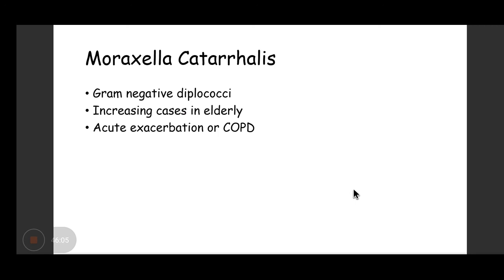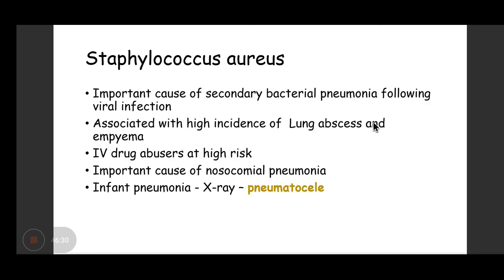Moraxella catarrhalis is a gram-negative diplococcus. Cases are increasing particularly in developed countries where immunization against pneumococcus and H. influenzae is widespread. It causes acute exacerbation of chronic obstructive pulmonary disease. Staphylococcus aureus is also an important cause of bacterial pneumonia, particularly following viral infection. It is associated with lung abscesses, empyema, and is common in IV drug abusers. It is an important cause of nosocomial and infant pneumonia. Cavitary lesions called pneumatoceles are visible on X-ray.